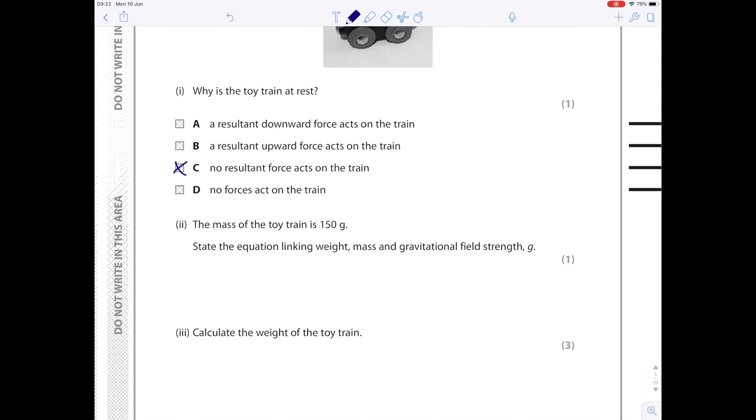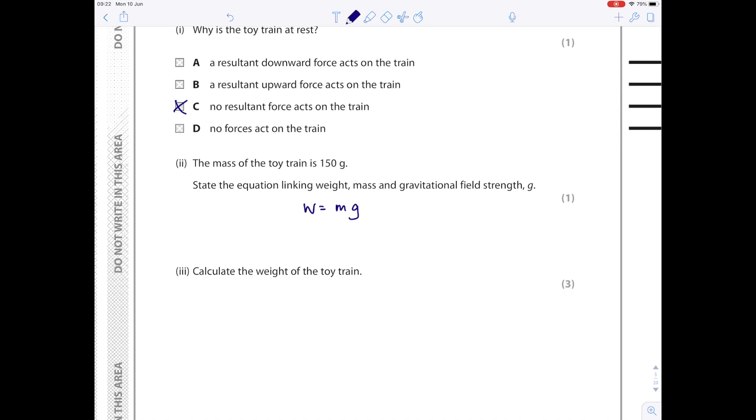The mass of the toy train is 150 grams. State the equation linking weight, mass, and gravitational field strength g. That is weight equals mass times gravitational field strength. Calculate the weight of the toy train. Weight equals mass times g. We know that the mass is 150 grams. We need to divide it by 1000 to get it into kilograms, multiply it by g which on Earth is 10. When you've done that, you get an answer which is 1.5 Newtons.